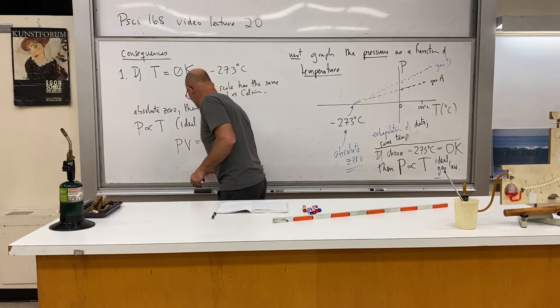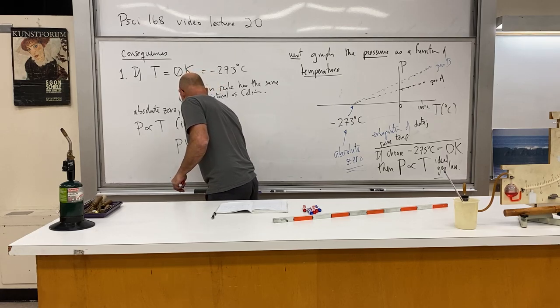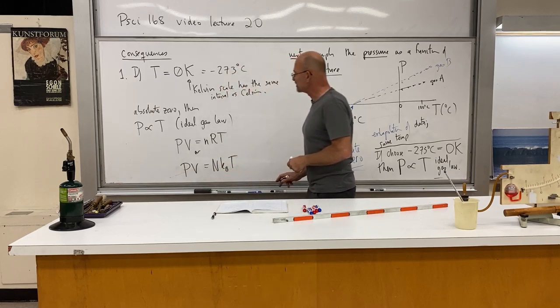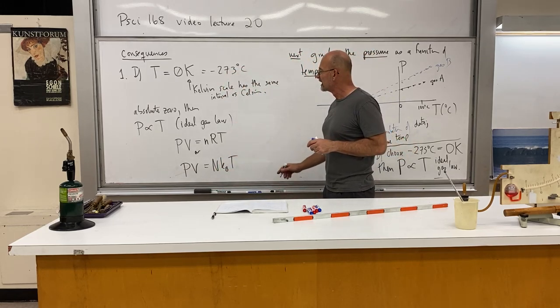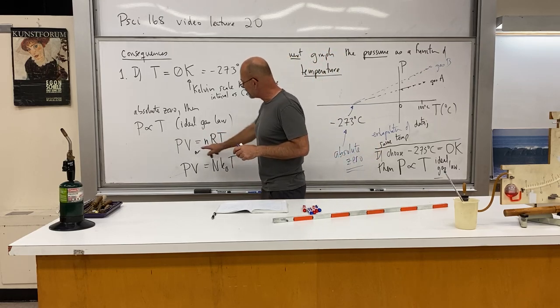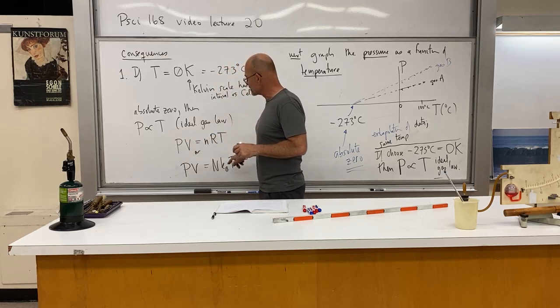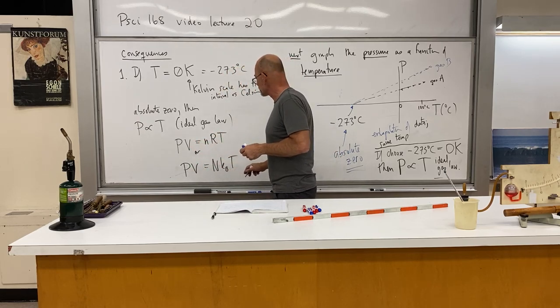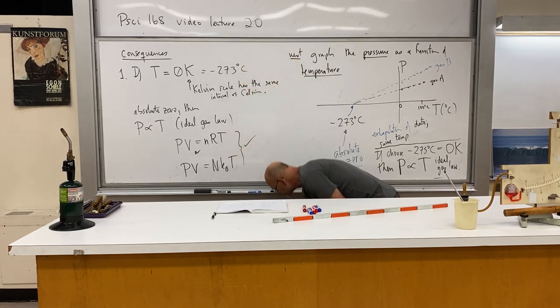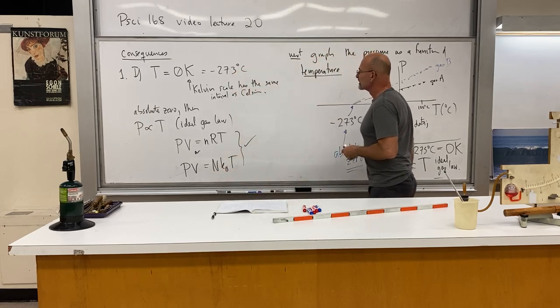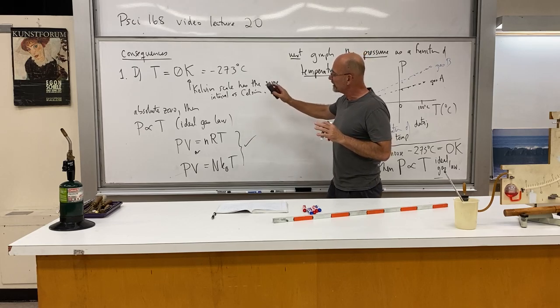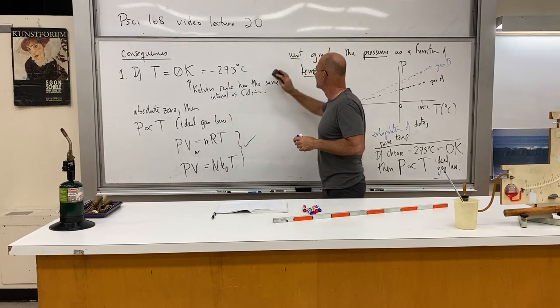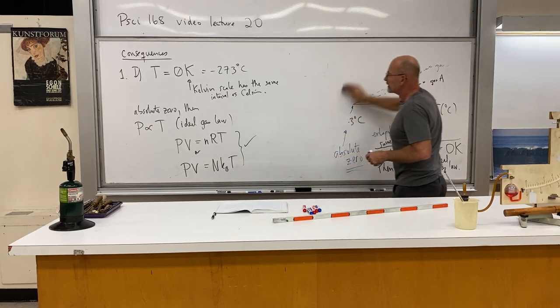So if we choose this absolute zero, then pressure is proportional to temperature. So then you get the ideal gas law. And just for your notes, because you may have seen this in a chemistry class, PV equals NRT. Or if you saw it in a physics class, PV equals capital N, Boltzmann constant times T. So that's just for culture. I'm not going to calculate anything with that. But the ideal gas law has this form, and you can see the constant volume aspect, because if the volume is constant, you just get the proportionality. So that's the first consequence.